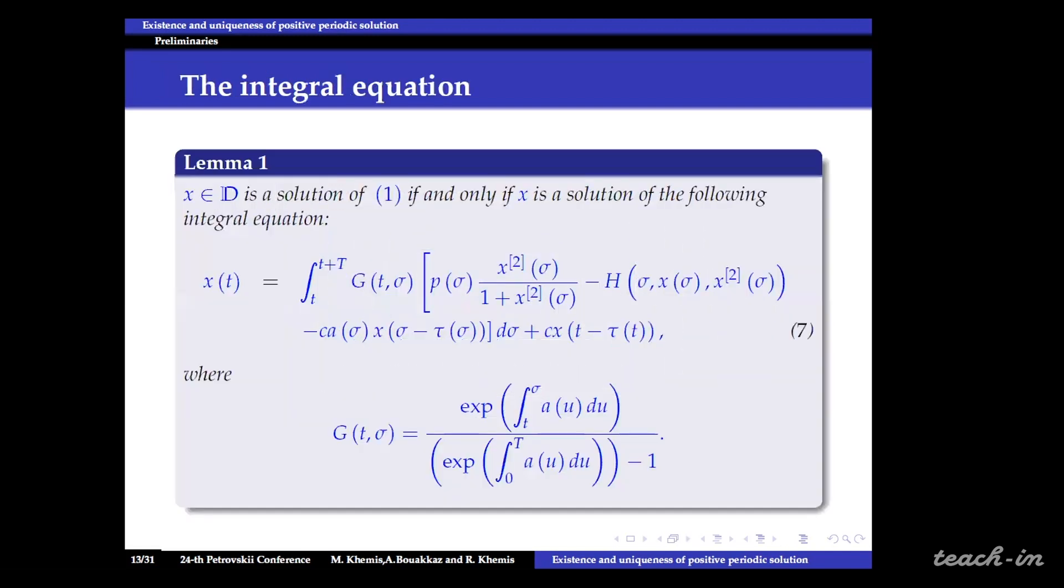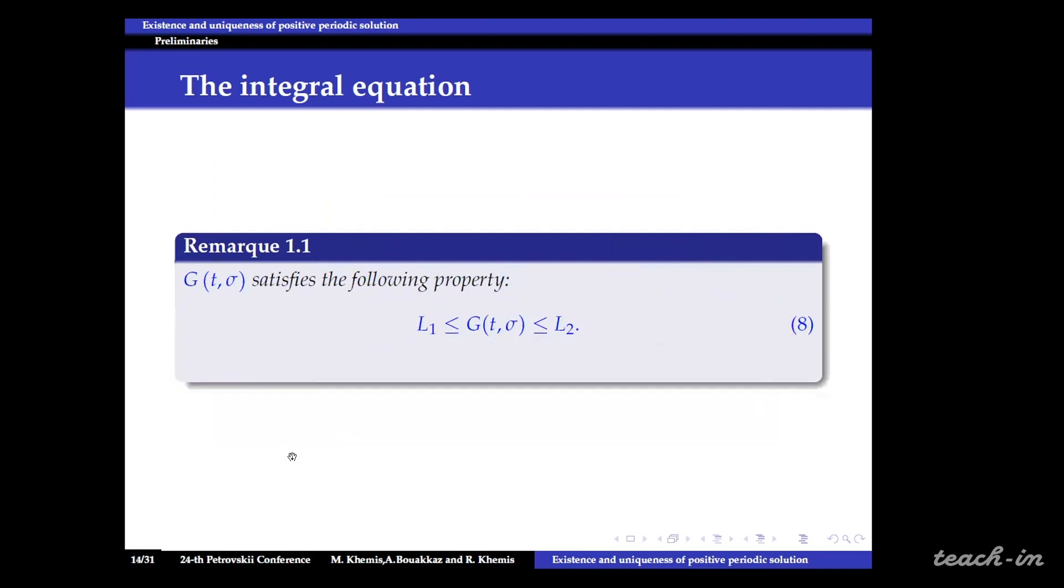As you can see from Lemma 1, we can point out that finding the periodic solution of our equation 1 is equivalent to finding a T periodic solution of the following integral equation, where the obtained kernel here is a Green's function and is given by this expression. Also it's worth mentioning that the kernel g satisfies the following property.